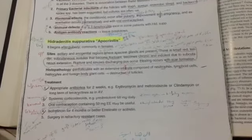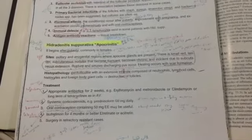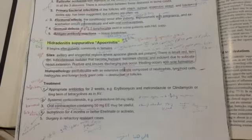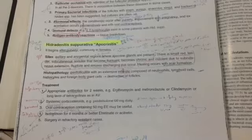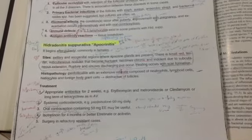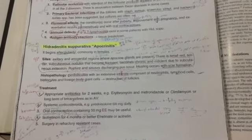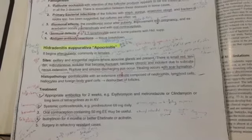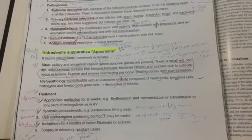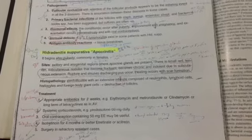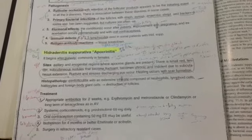The treatment is appropriate antibiotic for two weeks: erythromycin and metronidazole or clindamycin or long-term tetracyclines as acne vulgaris, systemic corticosteroid prednisone 60 mg daily, oral contraceptive containing 50 mg ethinyl estradiol may be useful, isotretinoin for four months or better, etretinate or acitretin, and surgery in the refractory resistant cases.